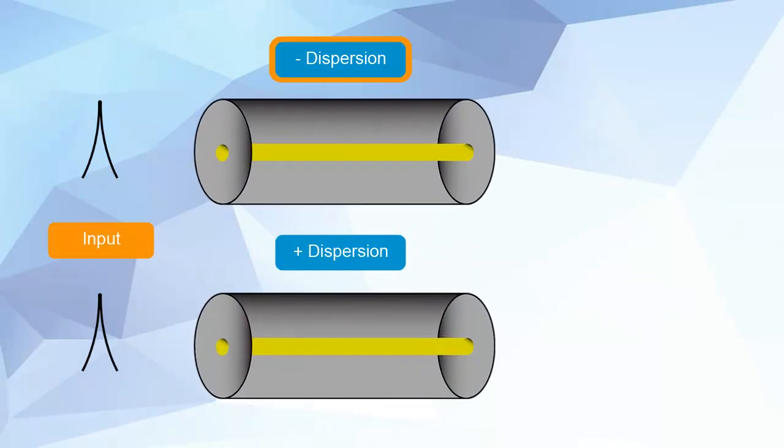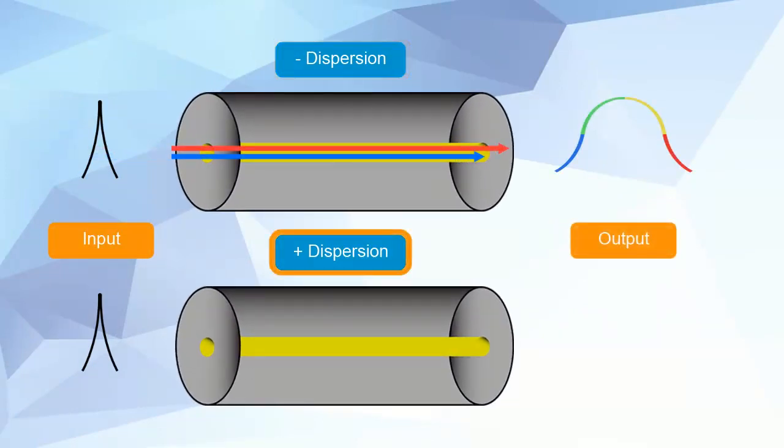With negative dispersion the reddish light travels faster, and with positive dispersion the bluish light travels faster.